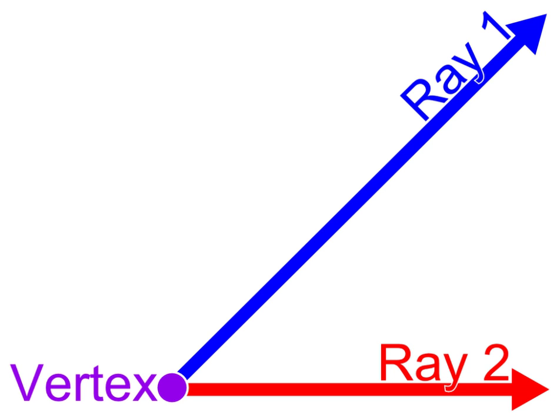Angles formed by two rays lie in a plane, but this plane does not have to be a Euclidean plane. Angles are also formed by the intersection of two planes in Euclidean and other spaces. These are called dihedral angles. Angles formed by the intersection of two curves in a plane are defined as the angle determined by the tangent rays at the point of intersection.